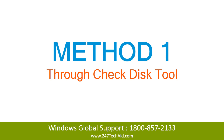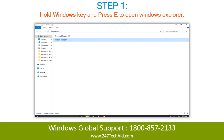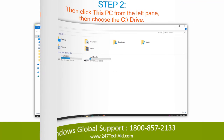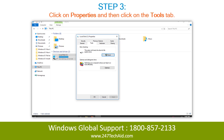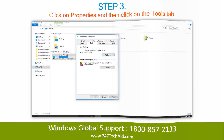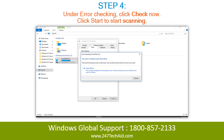Method 1: Through the Check Disk tool. Step 1: Hold the Windows key and press E to open Windows Explorer. Step 2: Click This PC from the left pane, then choose the C drive. Step 3: Click on Properties, then click on the Tools tab. Step 4: Under Error Checking, click Check Now, then click Start to begin scanning.